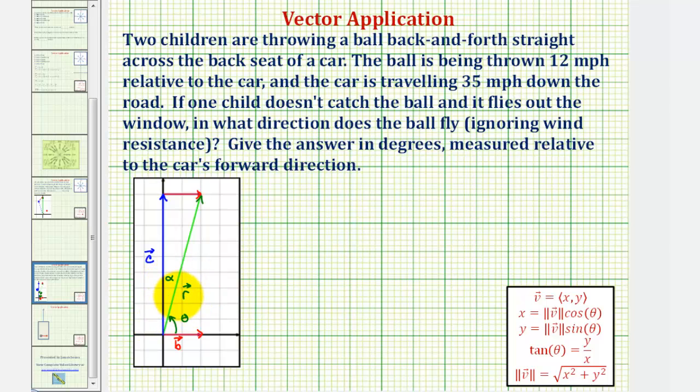Now there are several ways to find alpha in this problem, because vectors c and b form a right triangle. To be consistent with other problems, we could write vector c in component form. Because it's along the y-axis, the x component would be zero, and because it's traveling at 35 miles per hour, the y component would be 35.